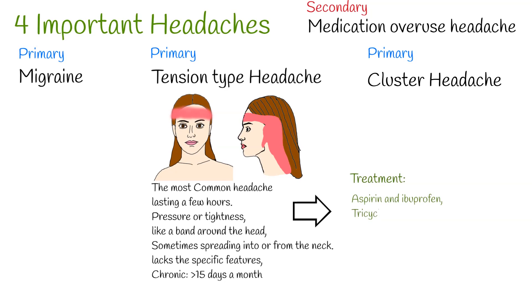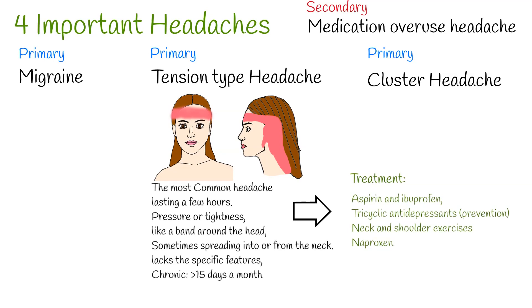Tricyclic antidepressants appear to be useful for prevention. Evidence supports that simple neck and shoulder exercises — including stretching, strengthening, and range-of-motion exercises — are effective in managing tension-type headache. Other NSAIDs that can also be used include ibuprofen, naproxen, ketoprofen, and dexketoprofen.